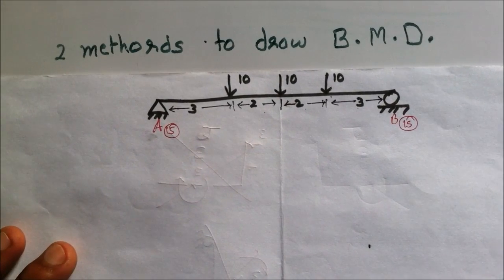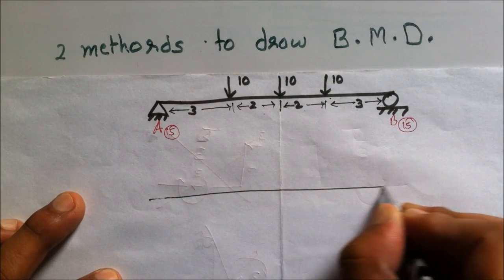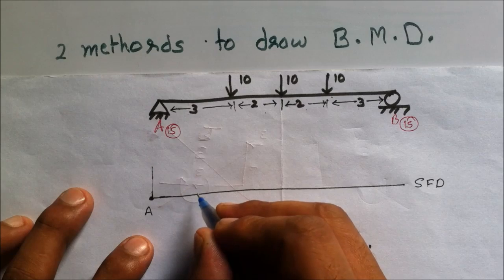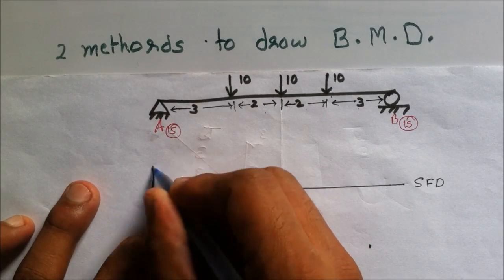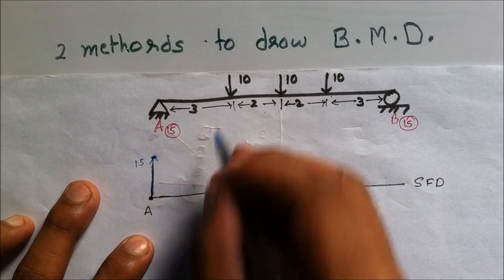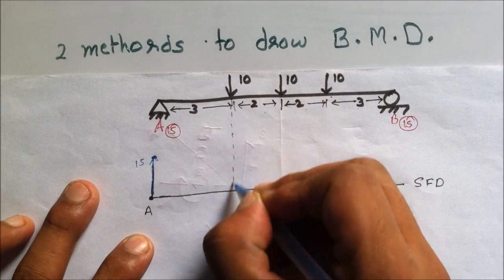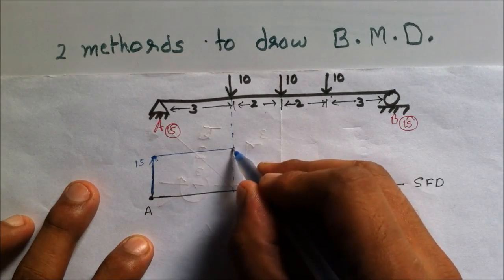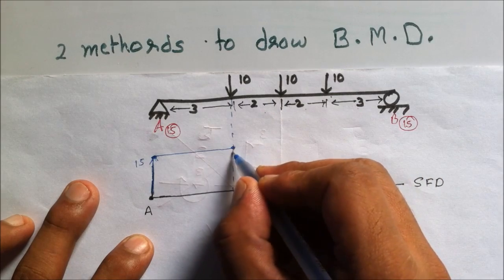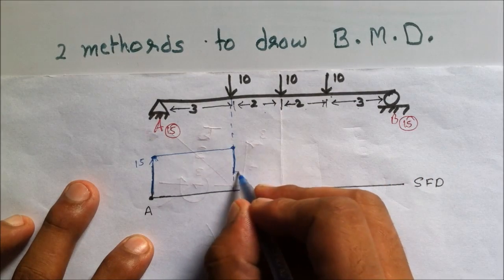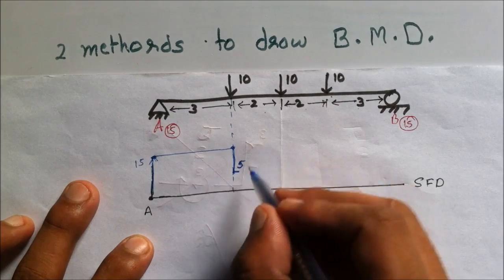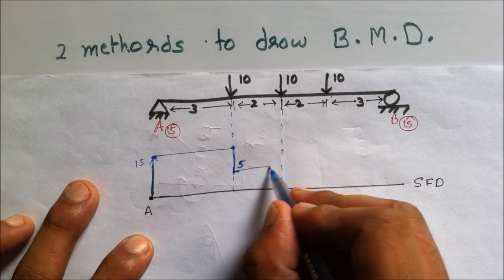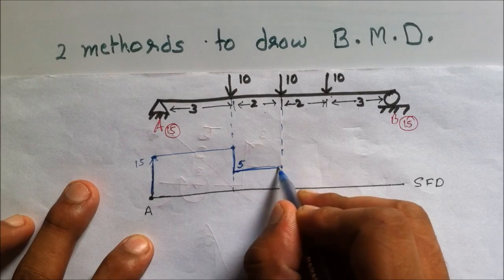Now drawing a reference line for the shear force diagram. At point A there is a 15 kilonewton upward force, so I draw 15 kilonewton. From A to the first loading point there is no change in force, so the line goes straight. At the first loading point there is a drop of 10 kilonewton — 15 minus 10 equals 5 kilonewton.